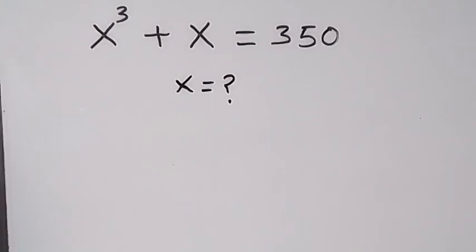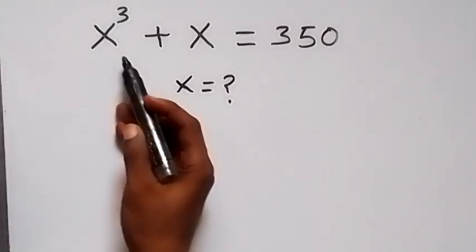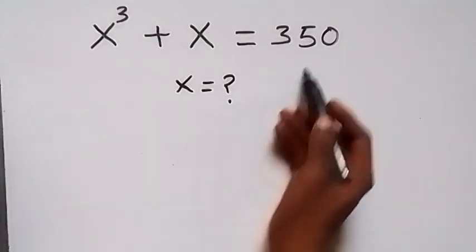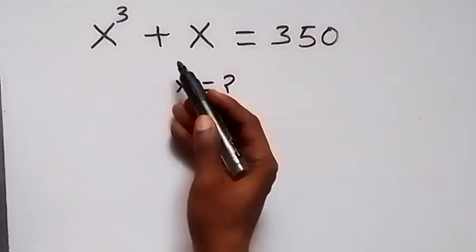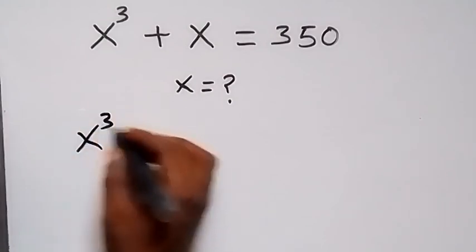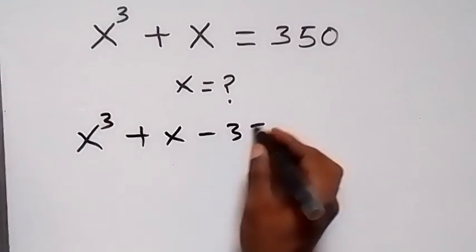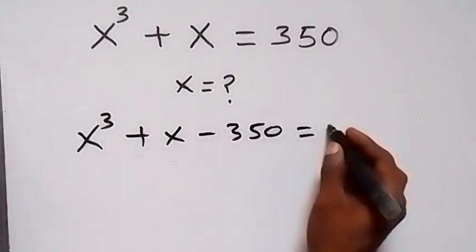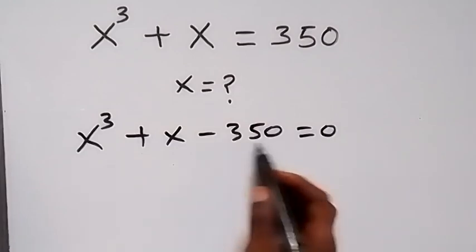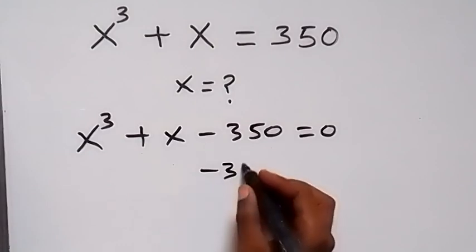Hello, you are welcome. How to find the value of x in this nice algebra problem: x raised to power 3 plus x equals 350. From here, let's bring 350 to the left hand side, and this becomes x cube plus x minus 350 equals to 0.